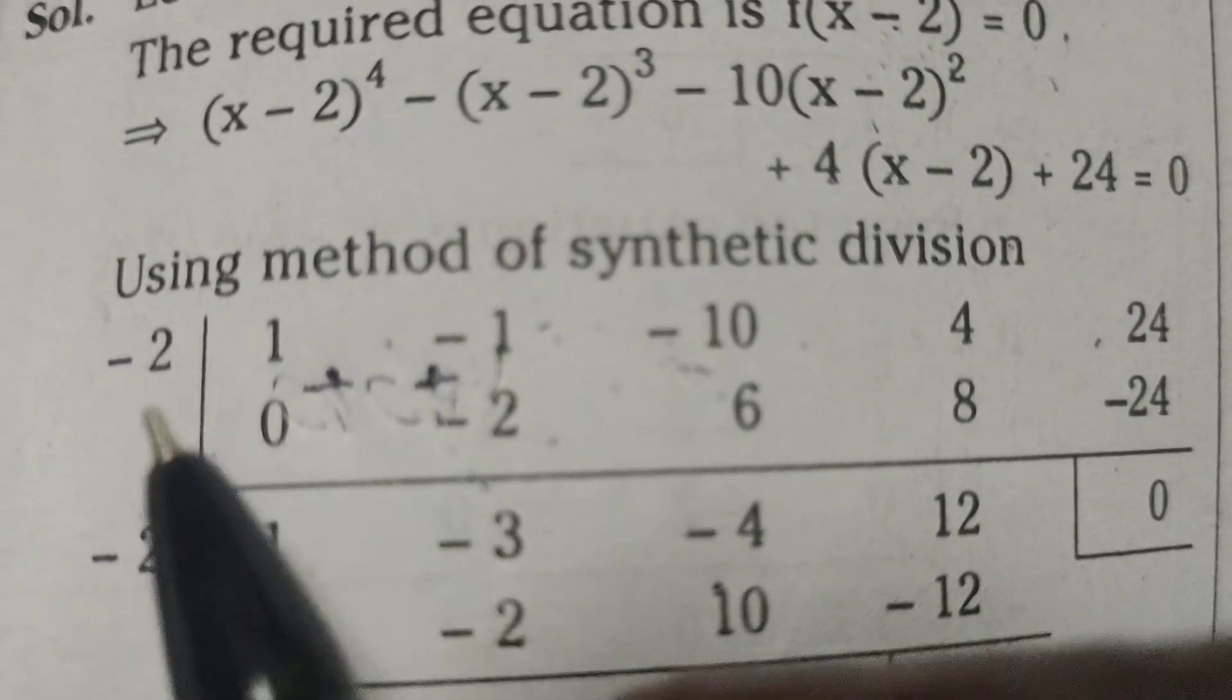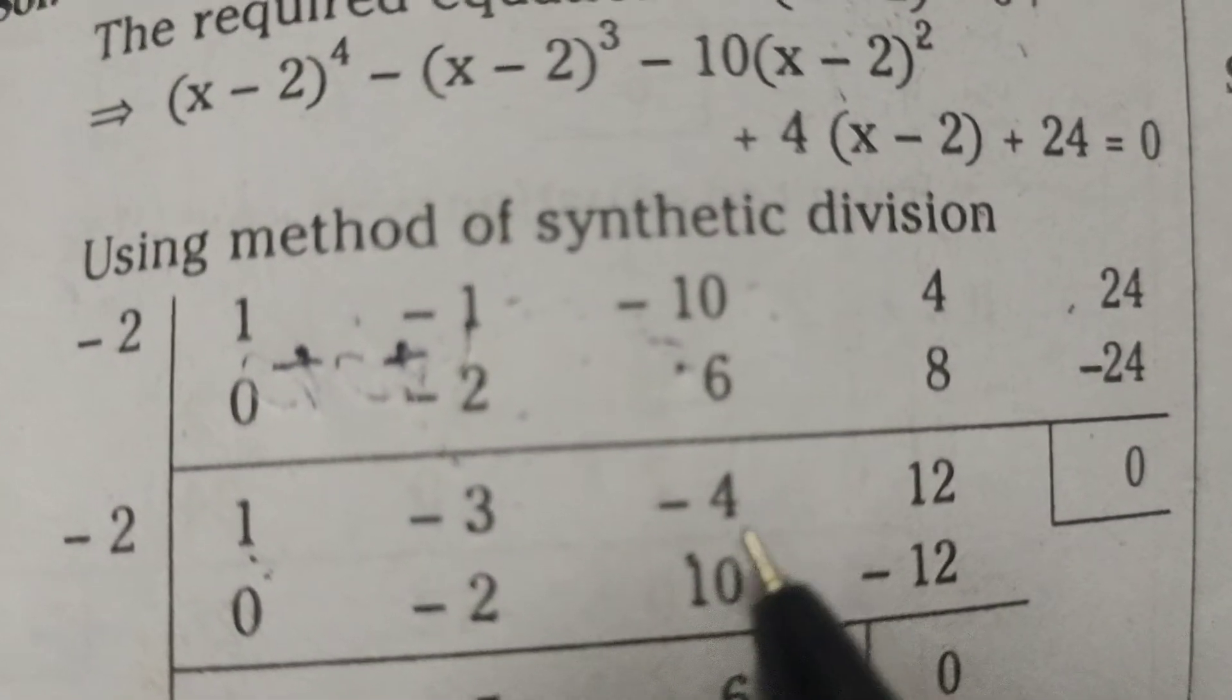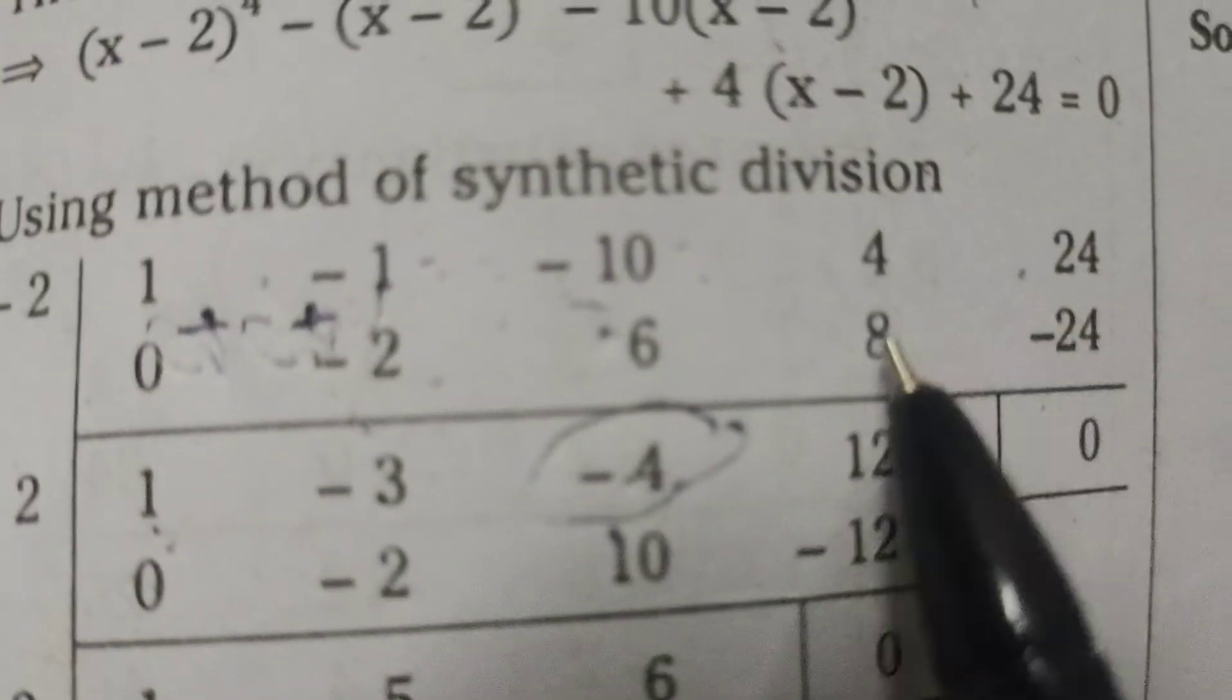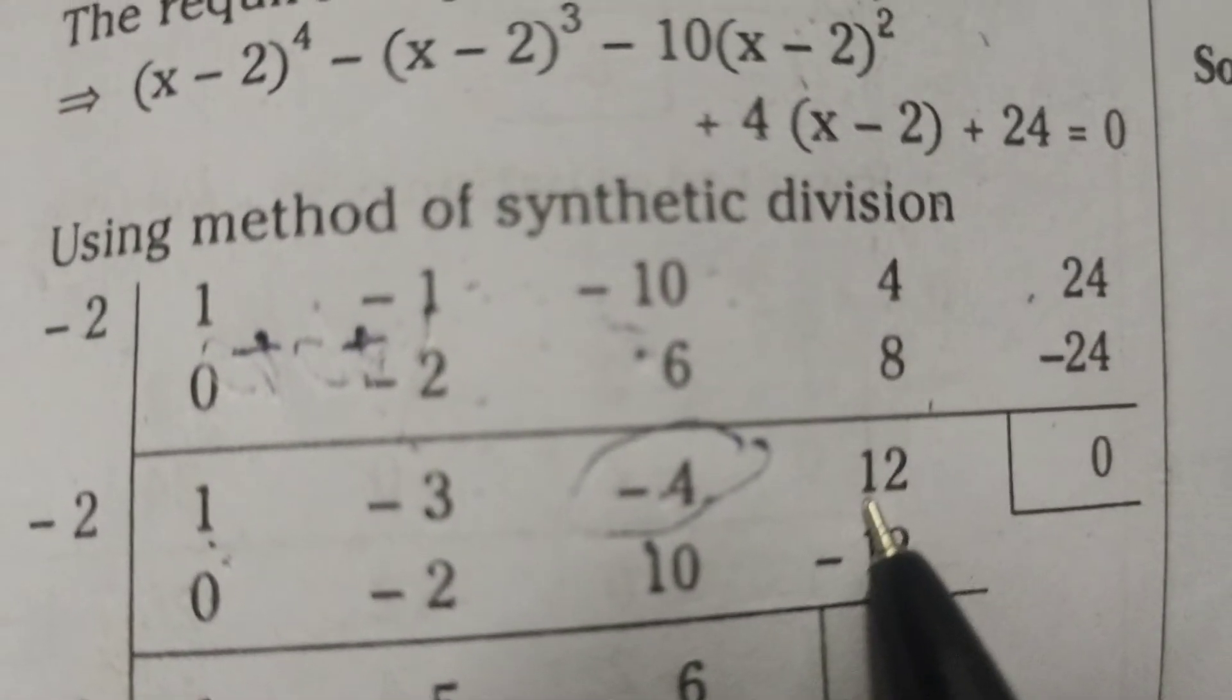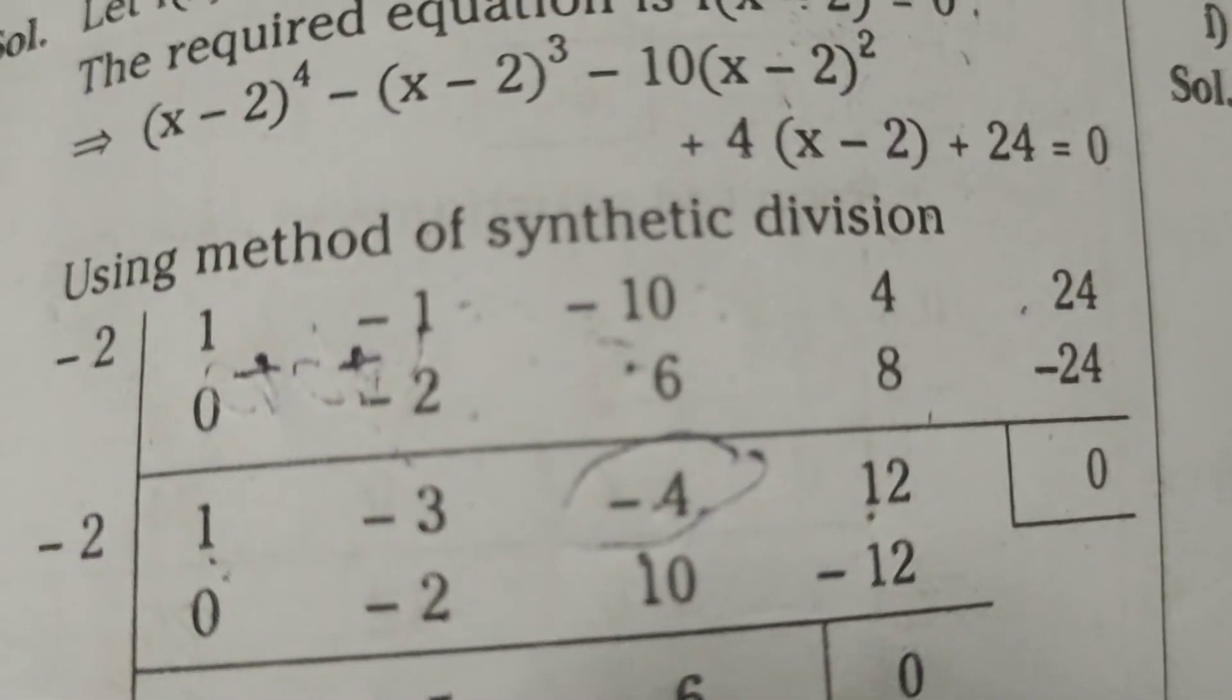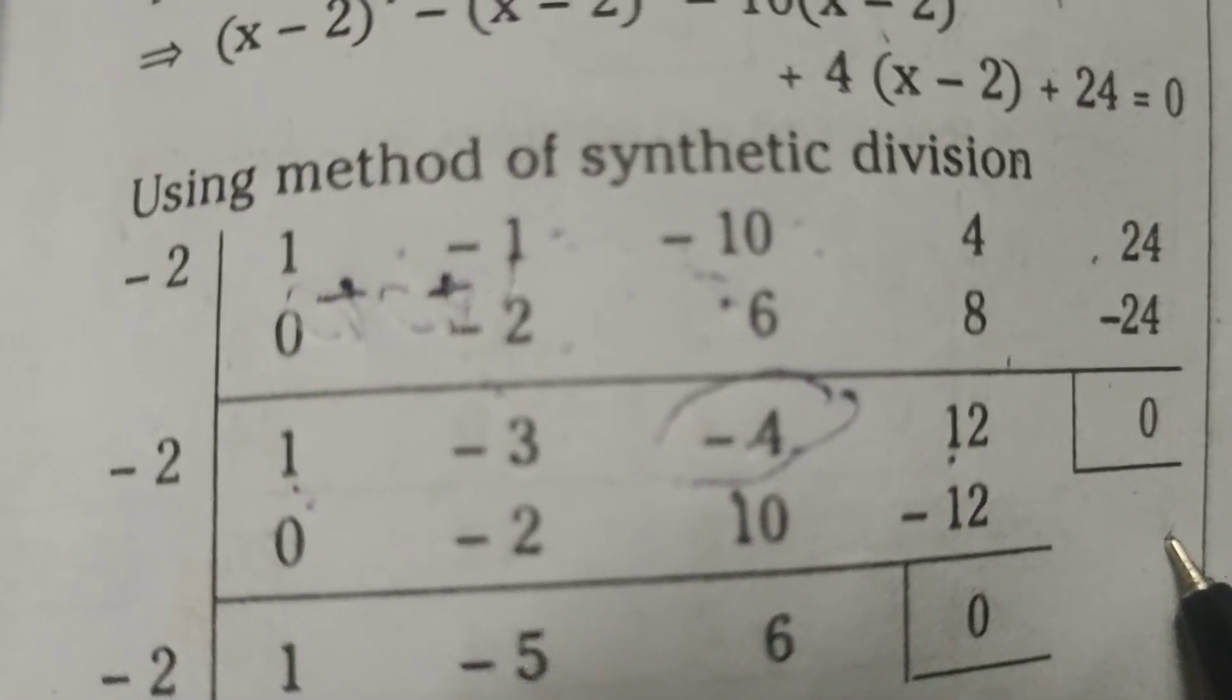-3 into -2, that is plus 6, -10 plus 6, -4. Again, -4 into -2, plus 8, 4 plus 8, 12, 12 into -2, that is -24, -24 plus 24. So here we will get 0.